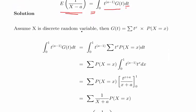So assume that x is a discrete random variable, then g of t is equal to the sum of t to the power of x times the probability of x equal to x.